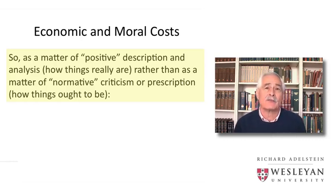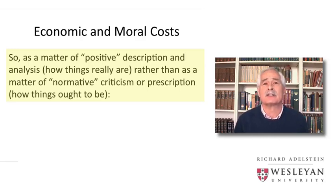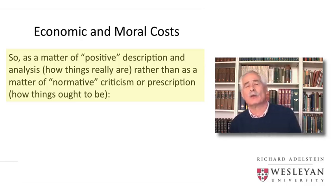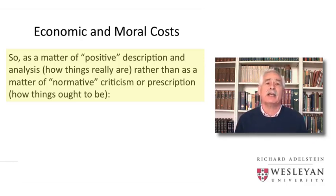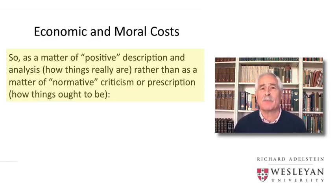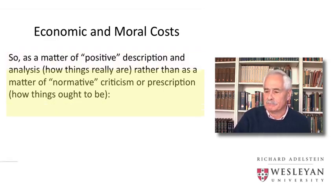Our discussion of criminal liability is not normative. It's not meant to say this is a good way or a bad way to organize the criminal justice system, nor to say that any instance of moral cost is laudable or despicable. It's simply to say this is how the system of criminal liability works, and this is the role played by the imposition of moral costs by criminal acts. When we make a positive description of how the system of criminal liability works, we can reduce the description to a series of propositions that analogize closely to the way in which the system of tort liability works.